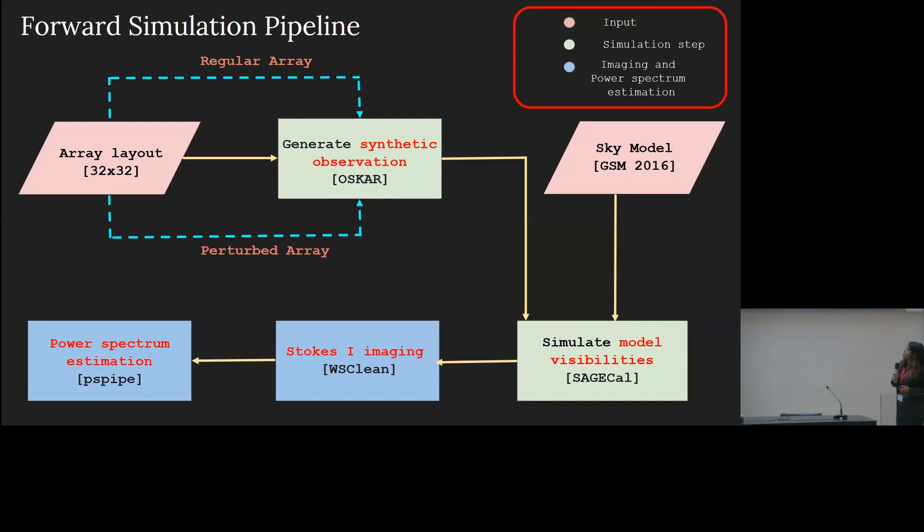What I show here is the schematic diagram of the first-order framework of the forward simulation pipeline that I am trying to develop. And in its current iteration, it takes into account the input array layout, which might be regular or an irregular array. By irregular, I mean I am introducing the antenna position offset, drawing the random error from a zero mean Gaussian distribution with a parameterized standard deviation. The idea is to vary the value of the standard deviation so that we can investigate on the varying levels of the perturbed antenna position.